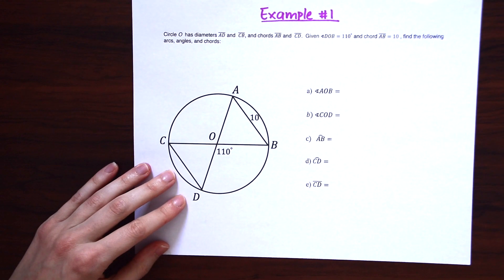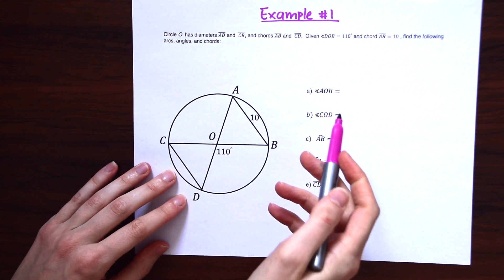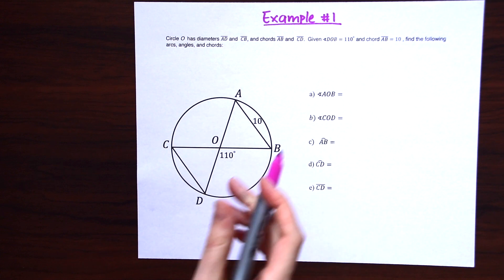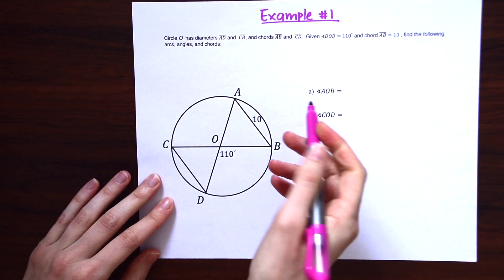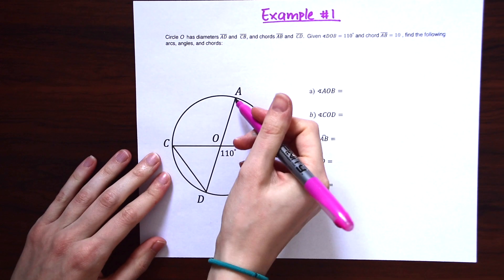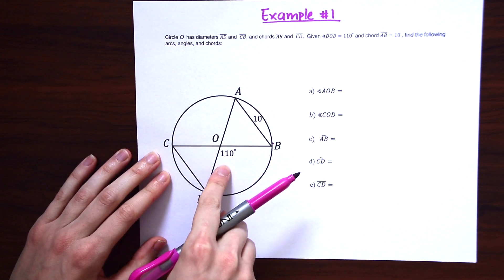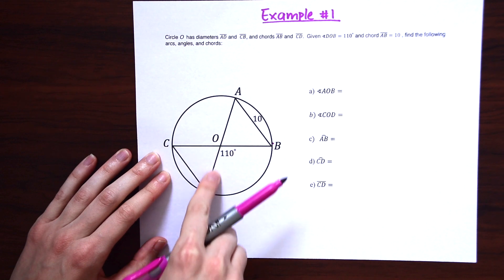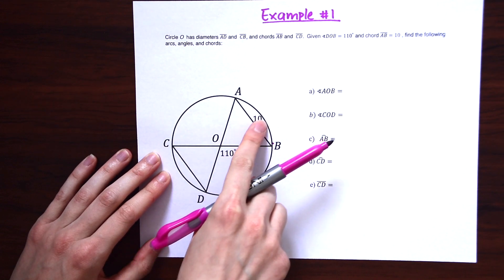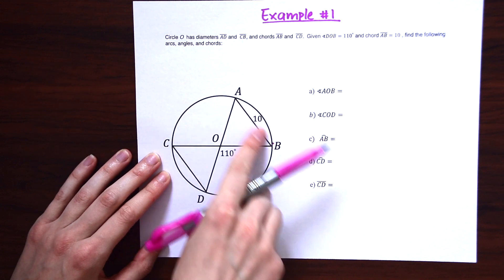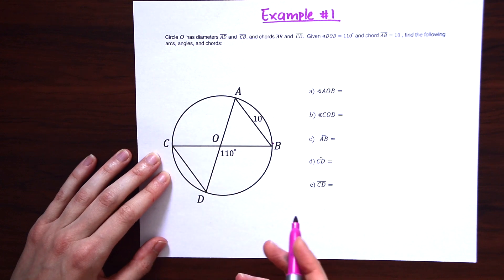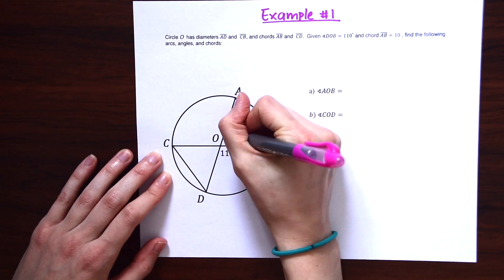Let's look at A first. So for A, we're trying to find angle AOB. So notice where AOB is. So angle AOB is right here. And right away, they already marked this for us. So we know 110 degrees is this angle, and we have this value of 10 for this chord AB. So we want to find this value over here.